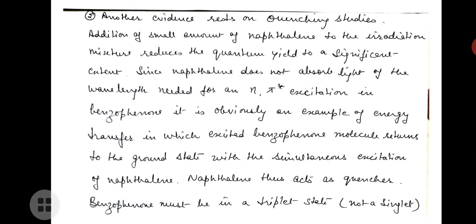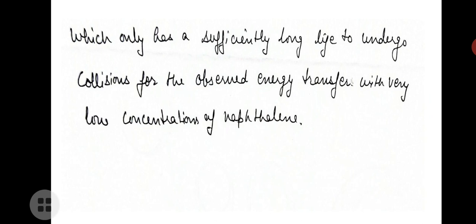Another piece of evidence rests on quenching studies. Addition of small amounts of naphthalene to the irradiation mixture reduces the quantum yield to a significant extent. Since naphthalene does not absorb light of the wavelength needed for n→π* excitation in benzophenone, it is an example of energy transfer in which the excited benzophenone molecule returns to the ground state with simultaneous excitation of naphthalene. Naphthalene acts as a quencher, and benzophenone must be in a triplet state, which has a sufficiently long lifetime to undergo collisions for the observed energy transfer at very low concentrations of naphthalene.